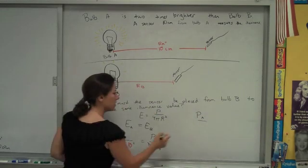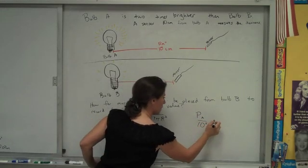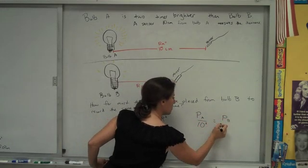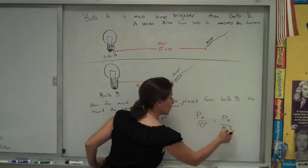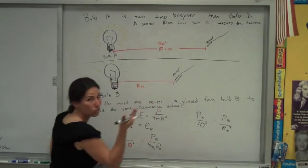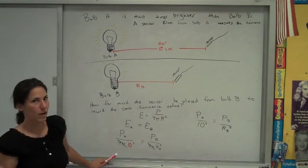But it's still not very solvable, even if I simplify it to make it look a little better. PA over 10 squared equals PB over RB squared. Well, there's what we're looking for, and there's two more unknowns in our problem, which is kind of a difficult thing.